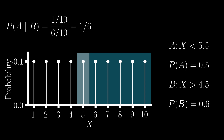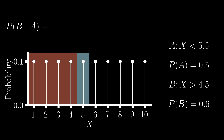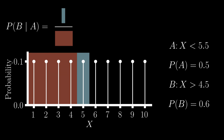Now, if you want to test yourself, perhaps you can pause the video and answer a similar question. What is our conditional probability of B given A? We'll do the same thing: compute the chance that both events occur relative to the chance we lie in the range associated with event A. And if you understand this idea, you should get 1 in 5 as an answer.